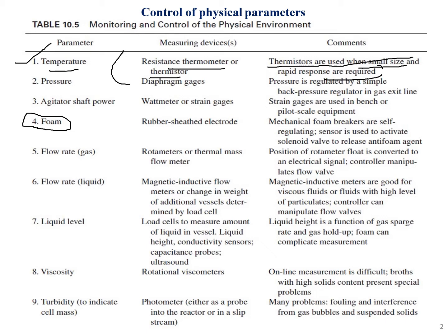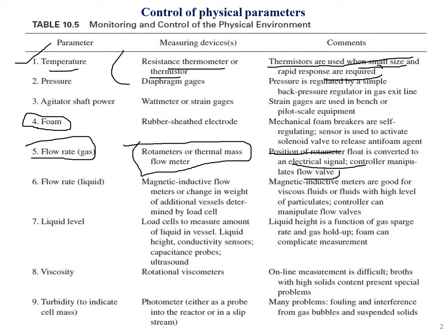The fifth point is flow rate for gas. It is measured with the help of rotameters or thermal mass flow meters. The position of the rotameter float is converted to an electric signal and the controller manipulates the flow valve.